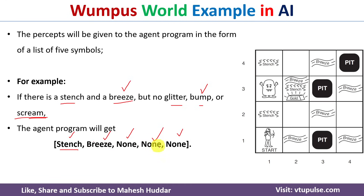In the next video, I will discuss how the agent will go from the initial state at 1,1 to the room where the gold is present, grab the gold, and come out of the cave successfully without being eaten by the Wumpus or falling into a pit. I will place that link in the description below. I hope the concept of Wumpus World and the PEAS description is clear. If you like the video, do like and share with your friends. Press the subscribe button for more videos and the bell icon for regular updates. Thank you for watching.